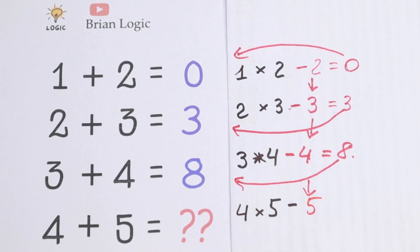And if we do all these things, we will have 20 minus 5, it will be equal to 15. And this will be our answer. So 4 plus 5 equal to 15.